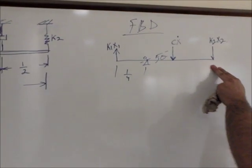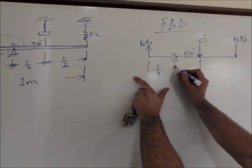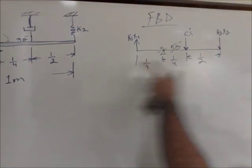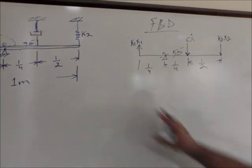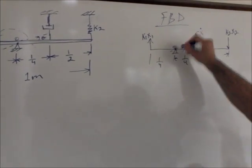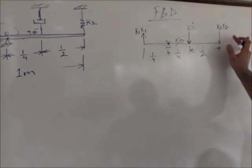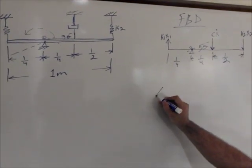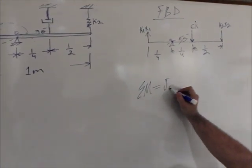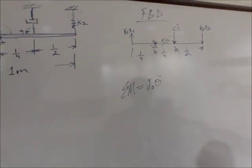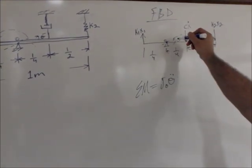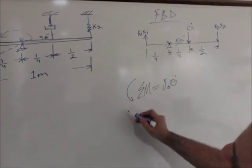Having drawn the free body diagram, we can now write the equation of motion. Since this is rotational, we take the moment summation at point O: the summation of moments at O equals the moment of inertia times angular acceleration. We'll say anything going counterclockwise is positive.